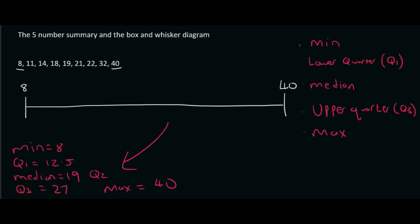Then you need to go all the way to 40. Then you would put Q1, which is 12 and a half, which would be somewhere over here. Then the median value is 19, which is about here. Q3 is 27, so that's about here. And then your maximum value is 40.